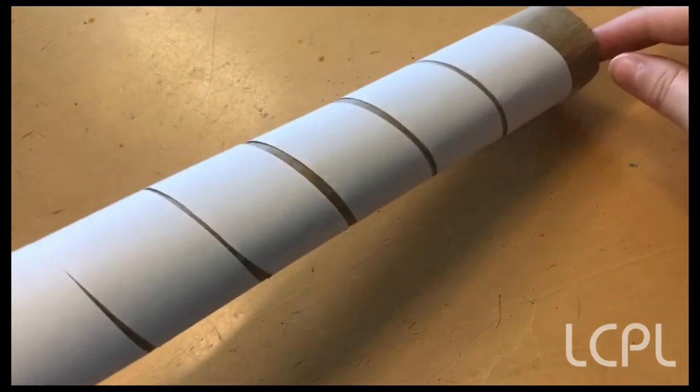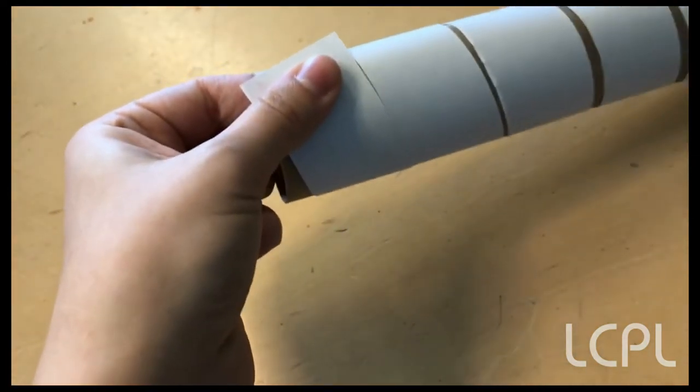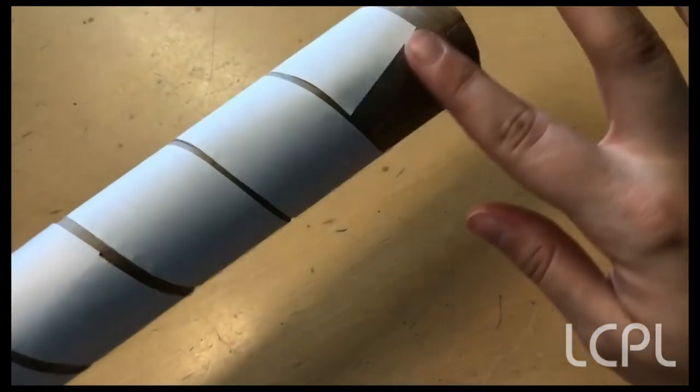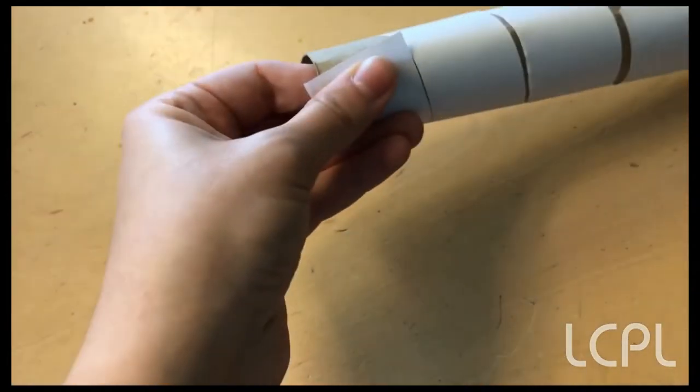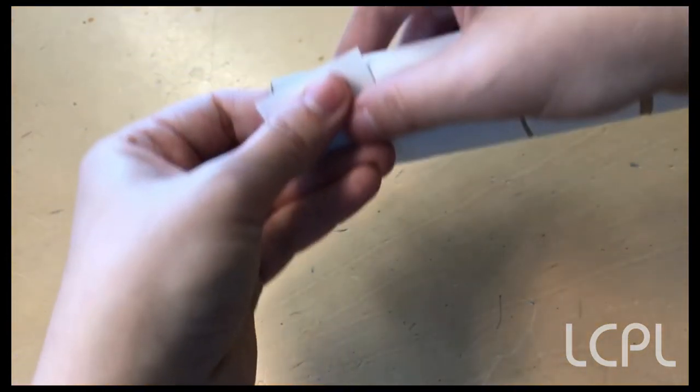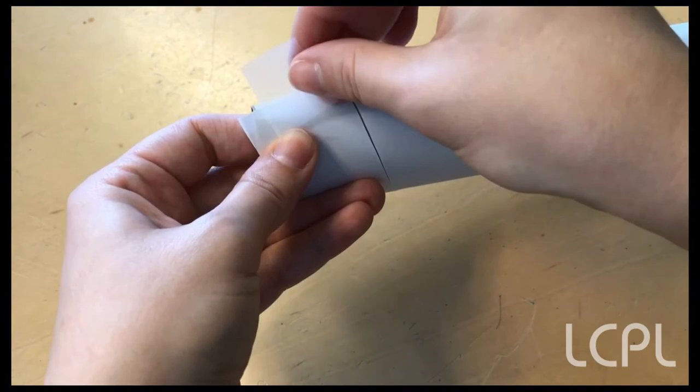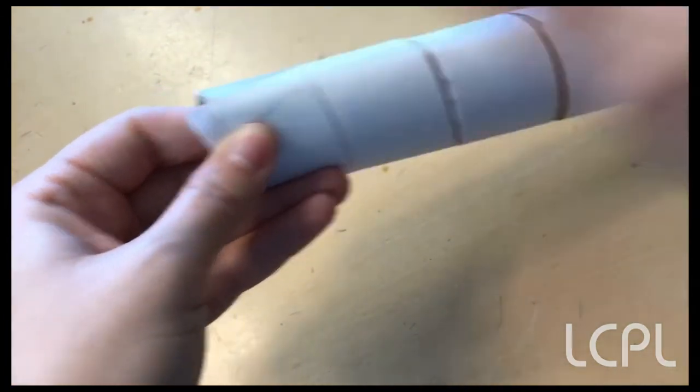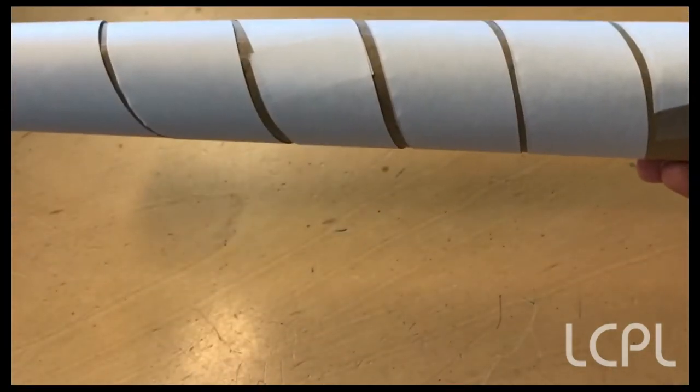Now that your scytale looks like this, you're gonna want to tape down the ends. I've already taped down this end, but you're gonna want to tape down the ends so that the paper doesn't move around while you're writing your secret message, because now it's time for us to do that.